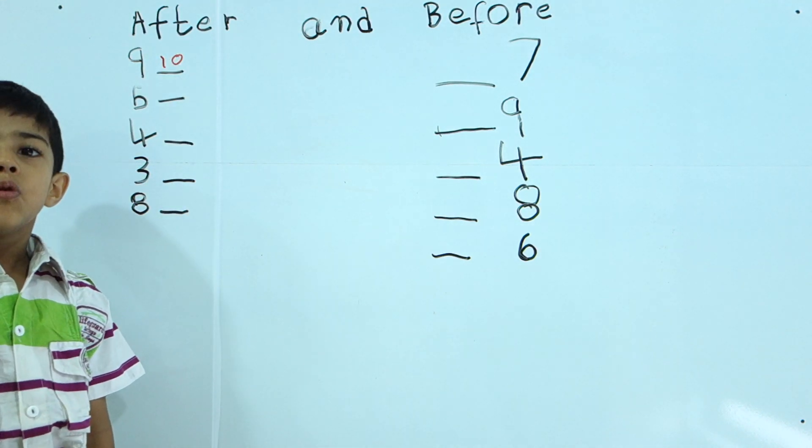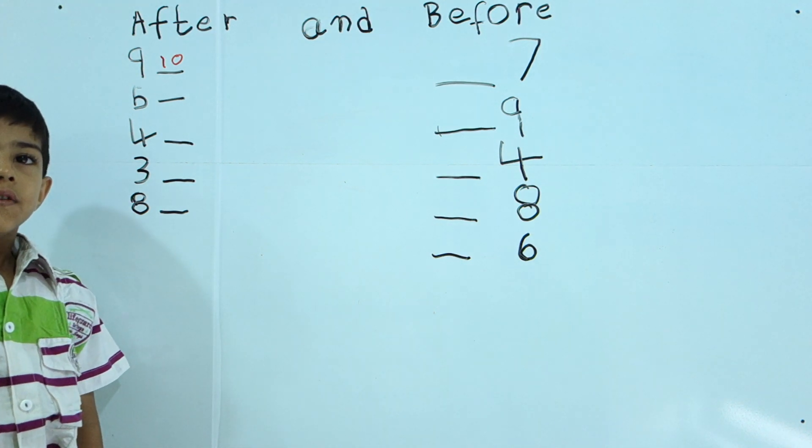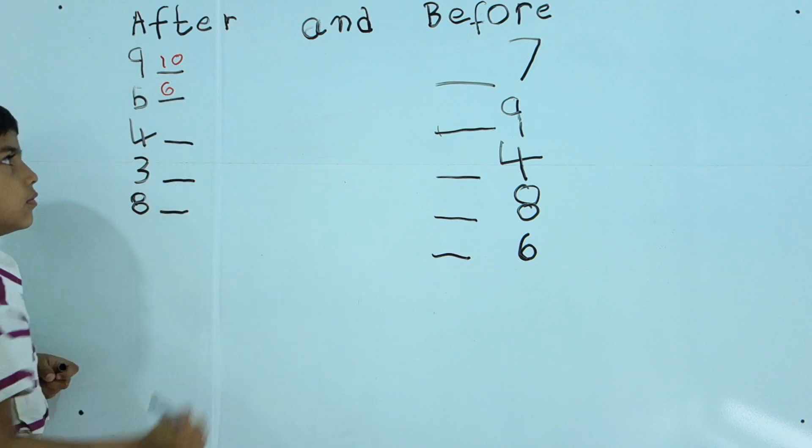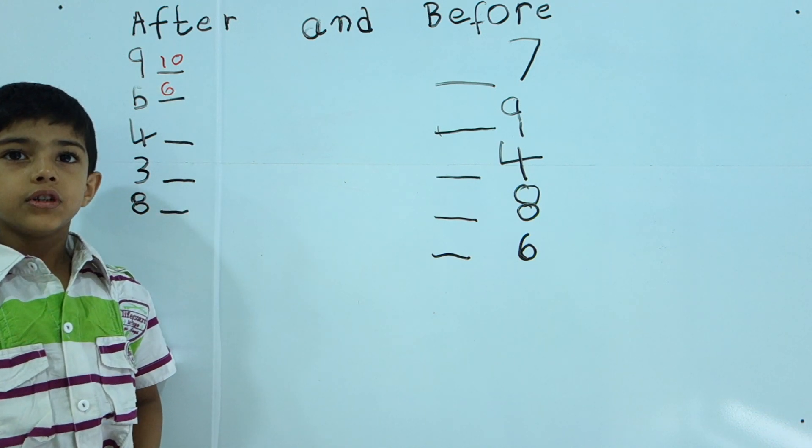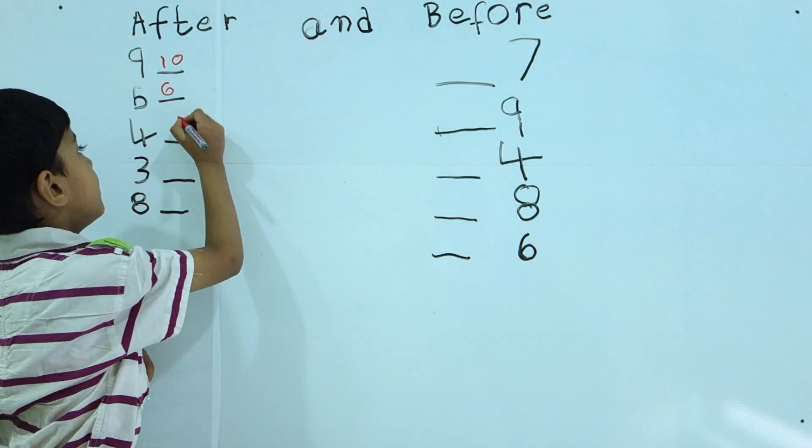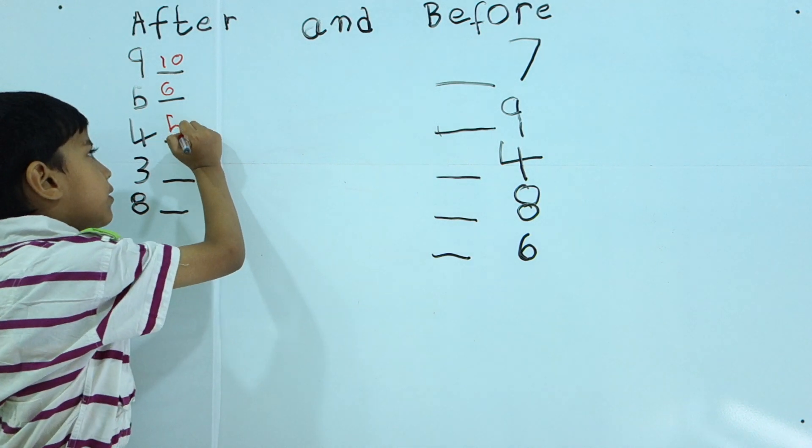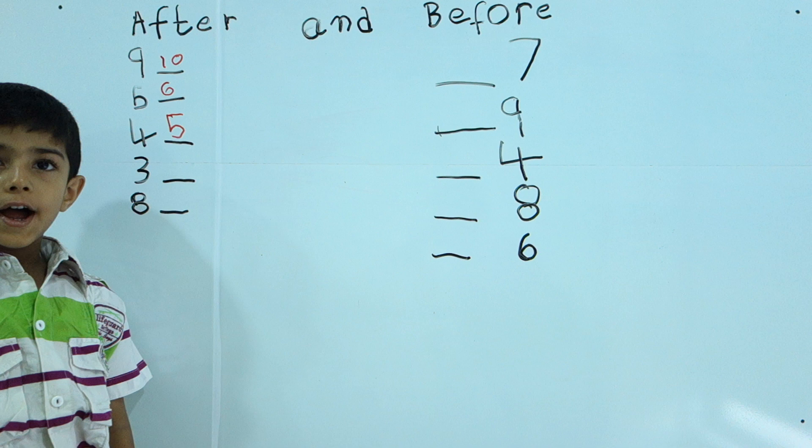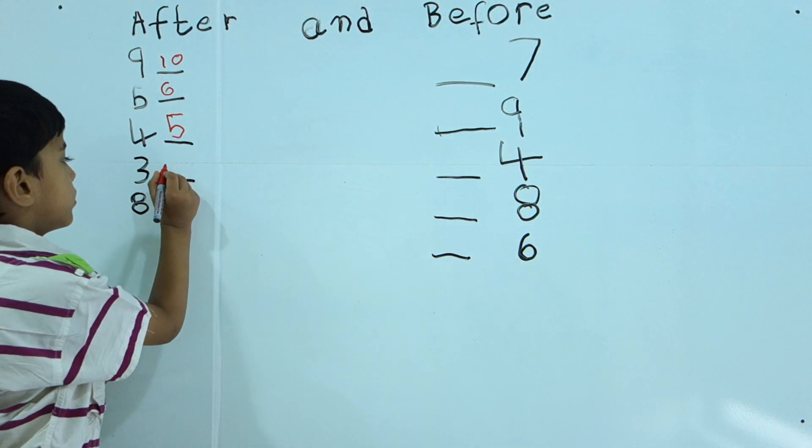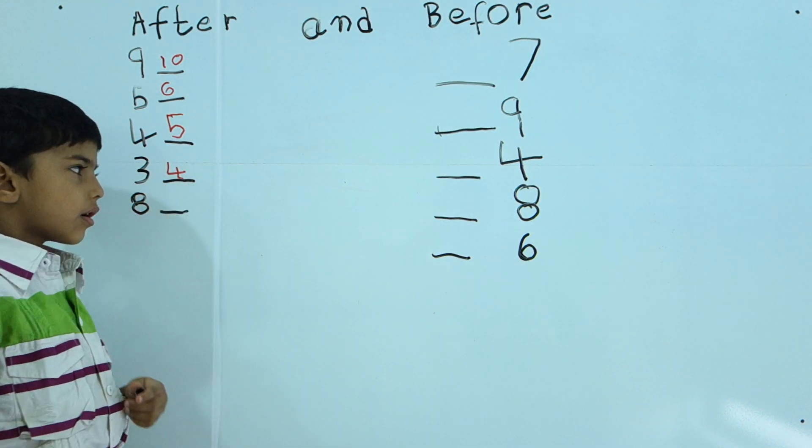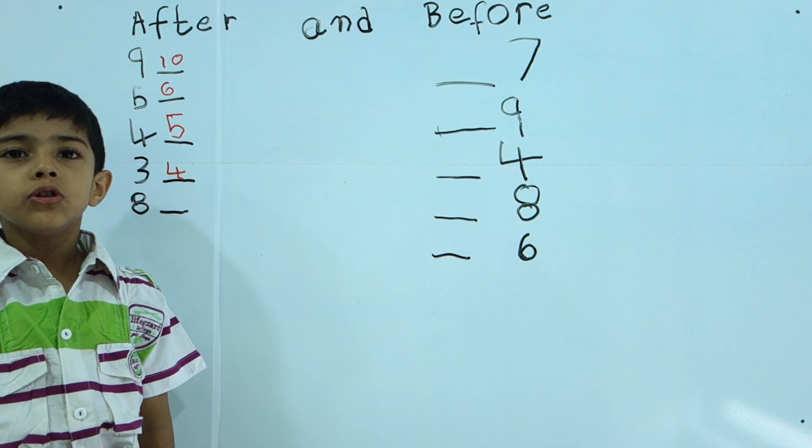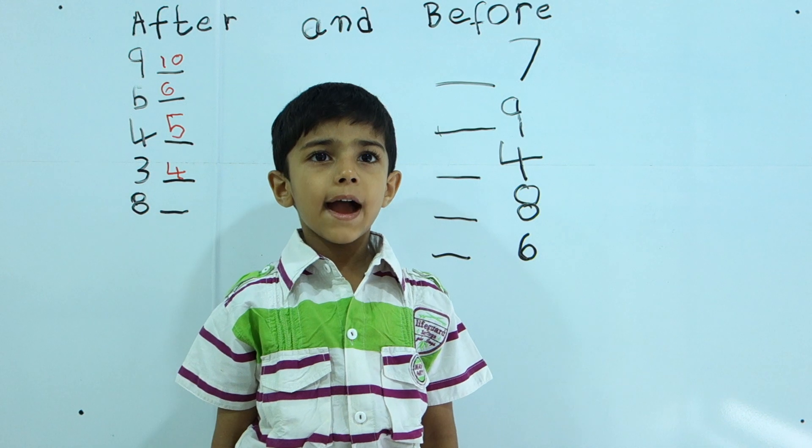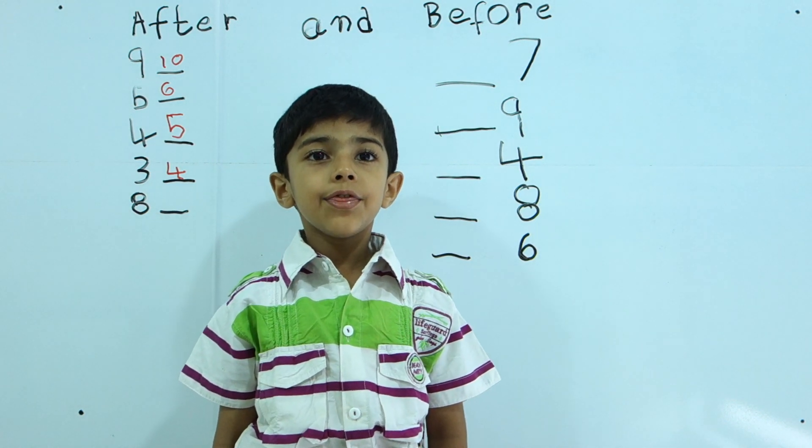One, two, one, two, four, five, six. One, two, three, four, five. One, two, three, four. One, two, three, four, five, six, eight, nine.